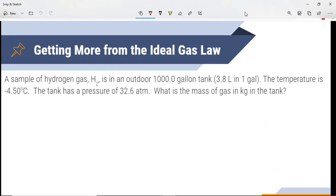A sample of hydrogen gas is in an outdoor 1,000 gallon tank, 3.8 liters in a gallon. The temperature is negative 4.50 degrees Celsius, and the tank has a pressure of 32.6 atm. What is the mass of gas in kilograms in the tank? So we're going to be using that derived PV equals nRT, where we have our molar mass is equal to our mass times R times T over PV.